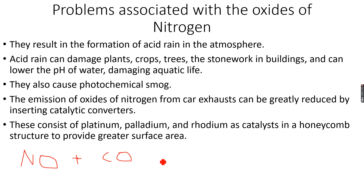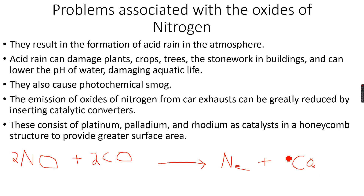In catalytic converters, these two gases — oxides of nitrogen and carbon monoxide — react with each other to form N₂ and CO₂. N₂ is not poisonous at all; it is a very non-polar and very unreactive gas, so it just moves away into the atmosphere. Carbon dioxide, even though it contributes to global warming, does not kill us instantly upon inhaling, so it is still much safer compared to carbon monoxide.